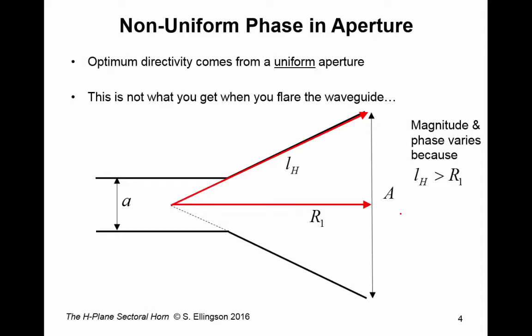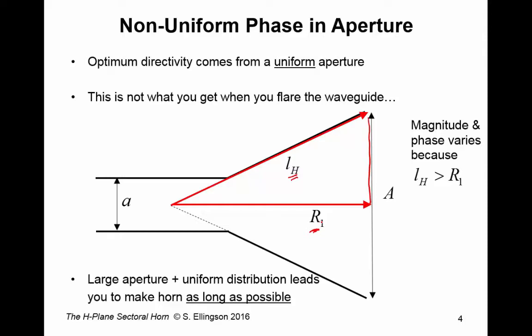So, here, let me quantify what's going to happen. This dimension here, I'll call L sub H. And this dimension here, I'll call R sub 1. And these two variables are defined in such a way so that they define a right triangle that coincides with the flare of the horn. Now, magnitude and phase varies because this distance, L sub H, is different from R sub 1. So, the desire for a large aperture and a uniform distribution leads you to make the horn as long as possible. In other words, to make R sub 1 as big as you can accommodate.